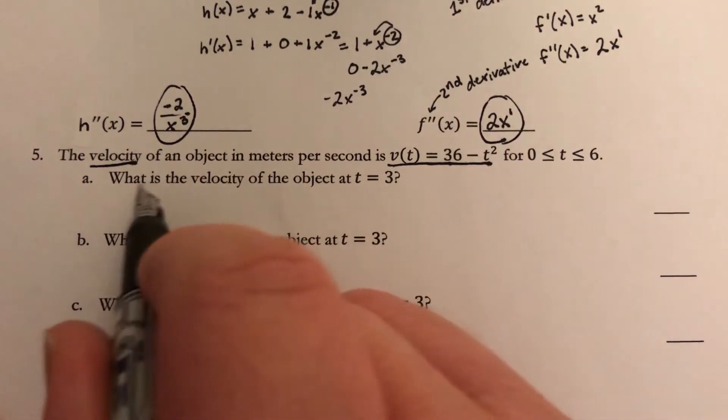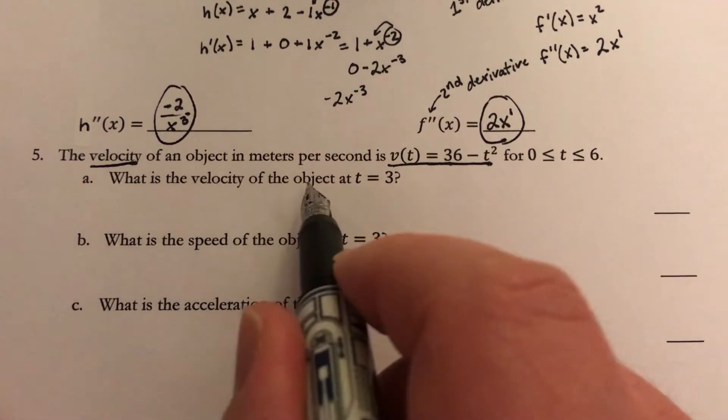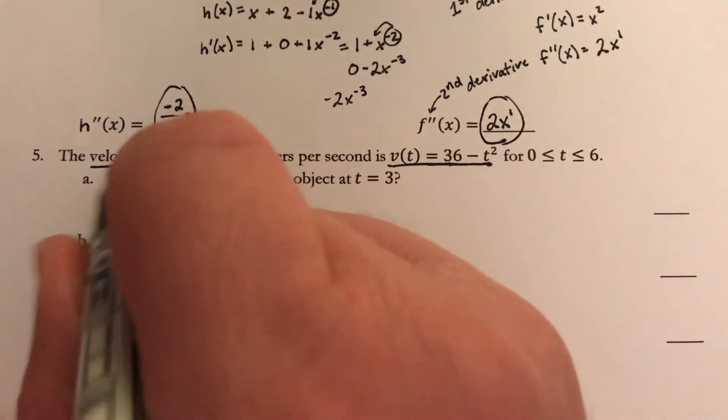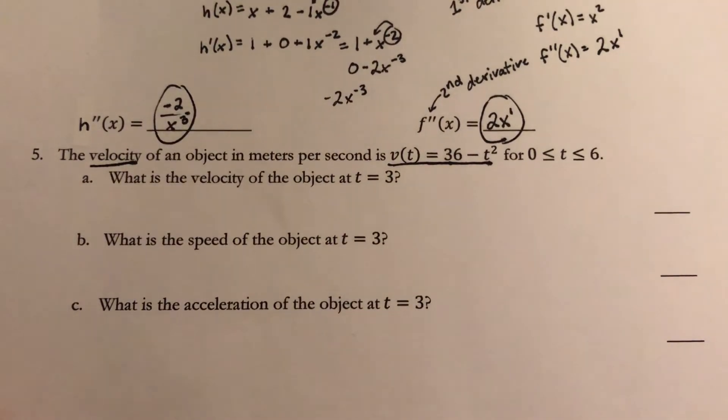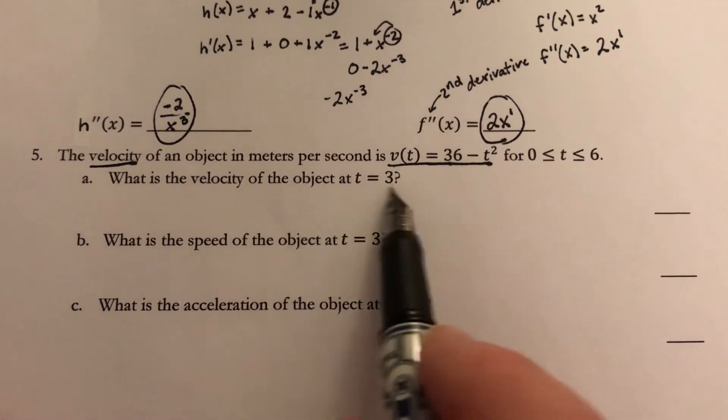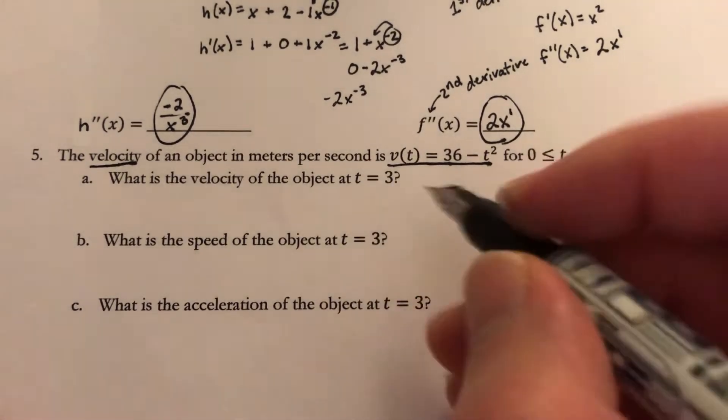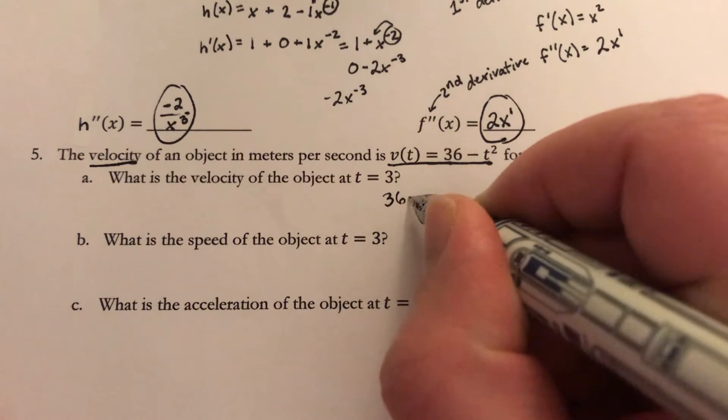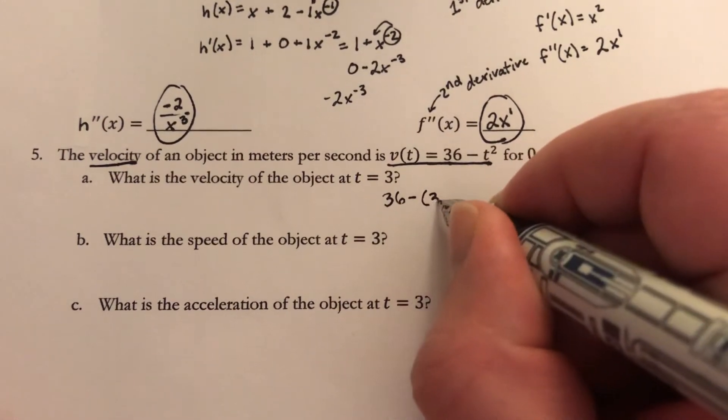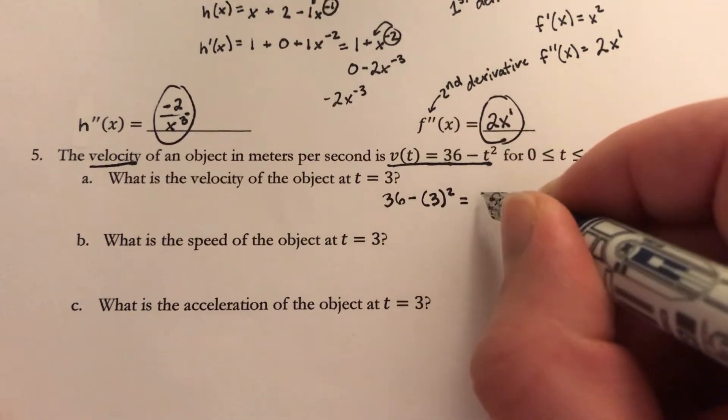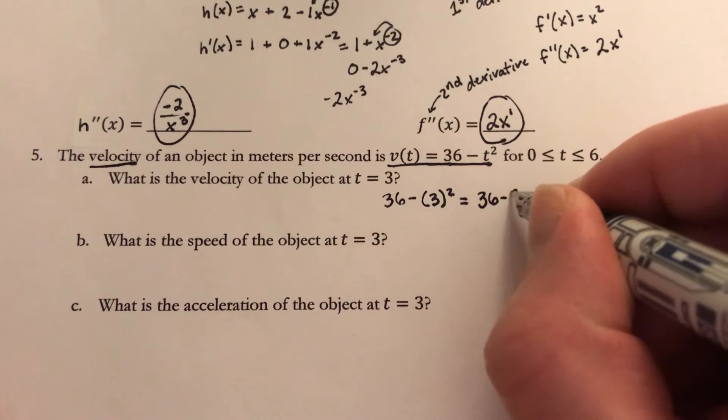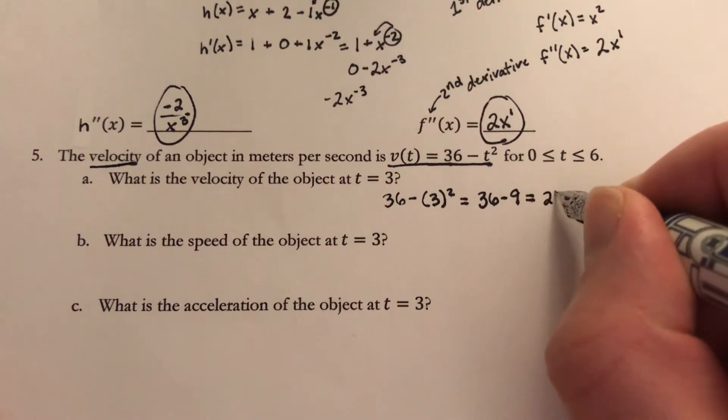The question, part a, says what is the velocity of the object at t equals 3? Well, it gives me the velocity as a function, so if I just want to know where it is at t equals 3, I really just need to plug in that 3. So we'll do 36 minus 3 squared. 3 squared is 9, so we're going to do 36 minus 9, which gives me 27.